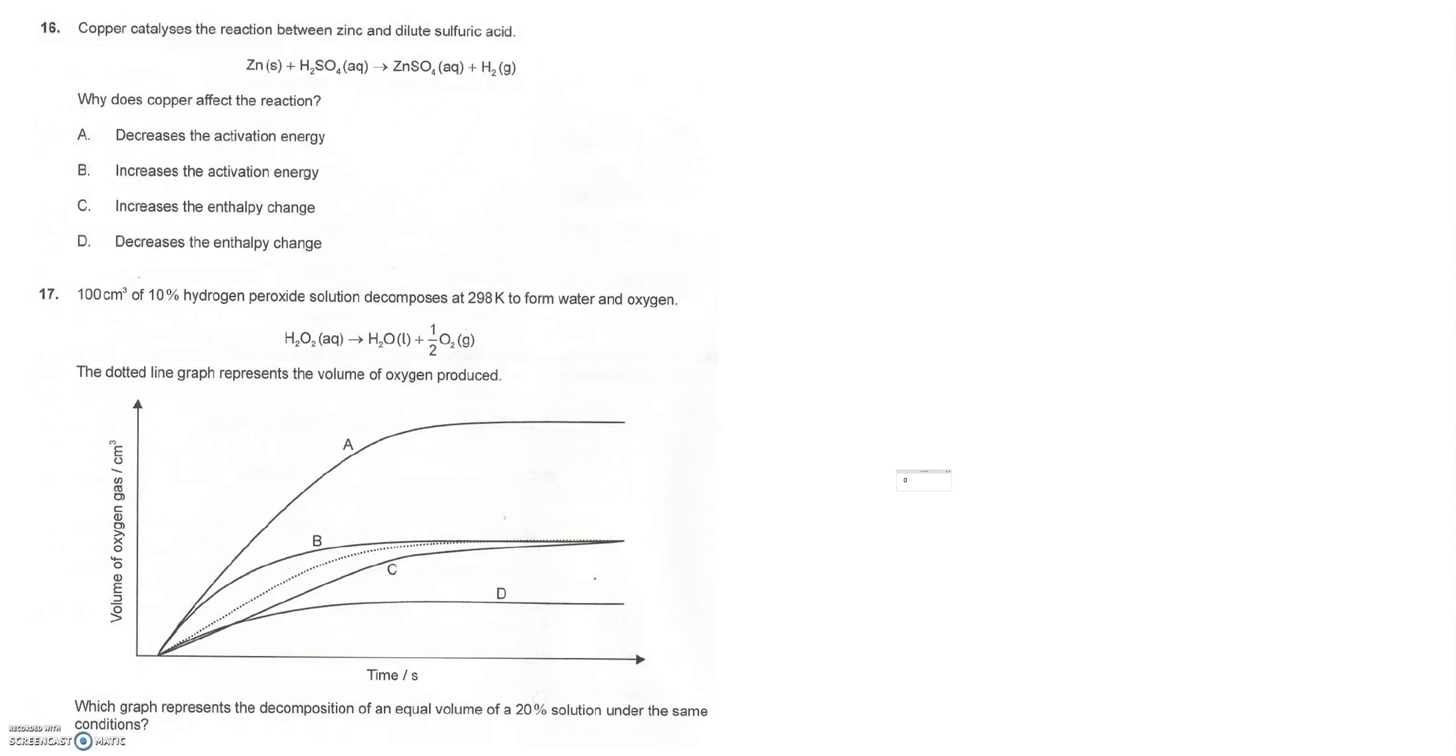It's asking what would a catalyst do to this. It's just asking what is a catalyst—it's putting all these beautiful balanced equations and everything with it, but really it's just asking what is the definition of a catalyst. What a catalyst does is it decreases or lowers the activation energy, so A is the correct answer.